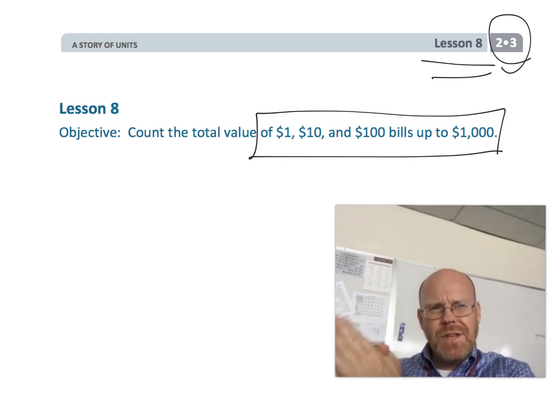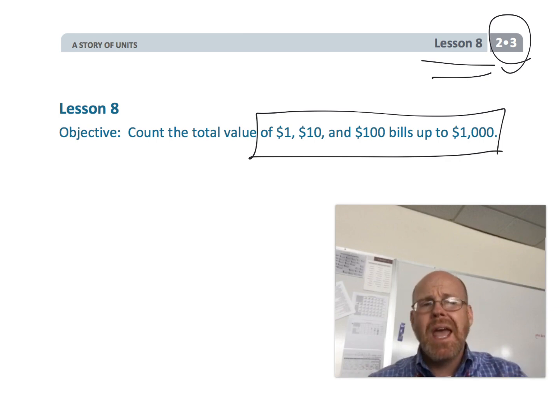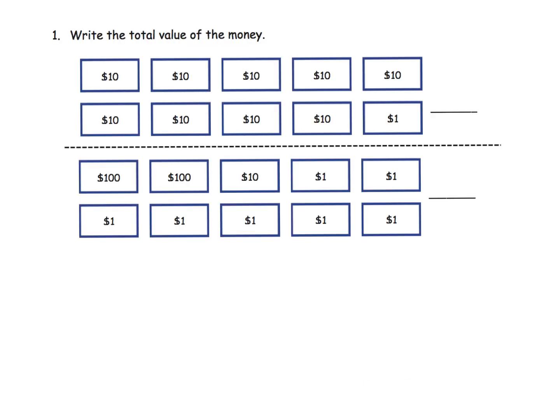The idea is that maybe we're moving from the physical concept of popsicle sticks to a more abstract concept, money. Eventually students are going to be totally in the abstract with place value. Here it's pretty straightforward: we're supposed to be finding the total value of the money.